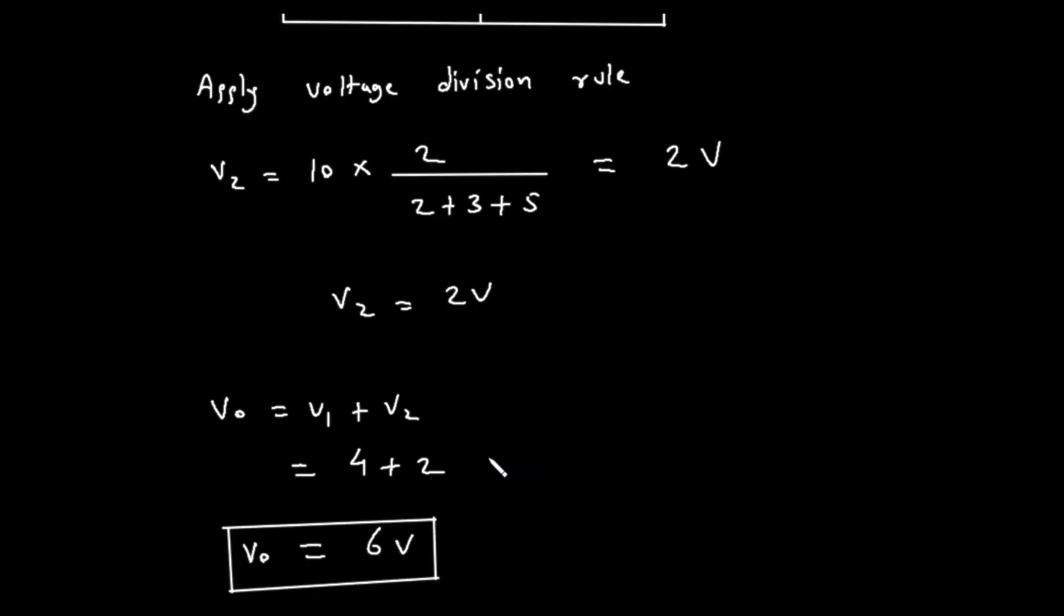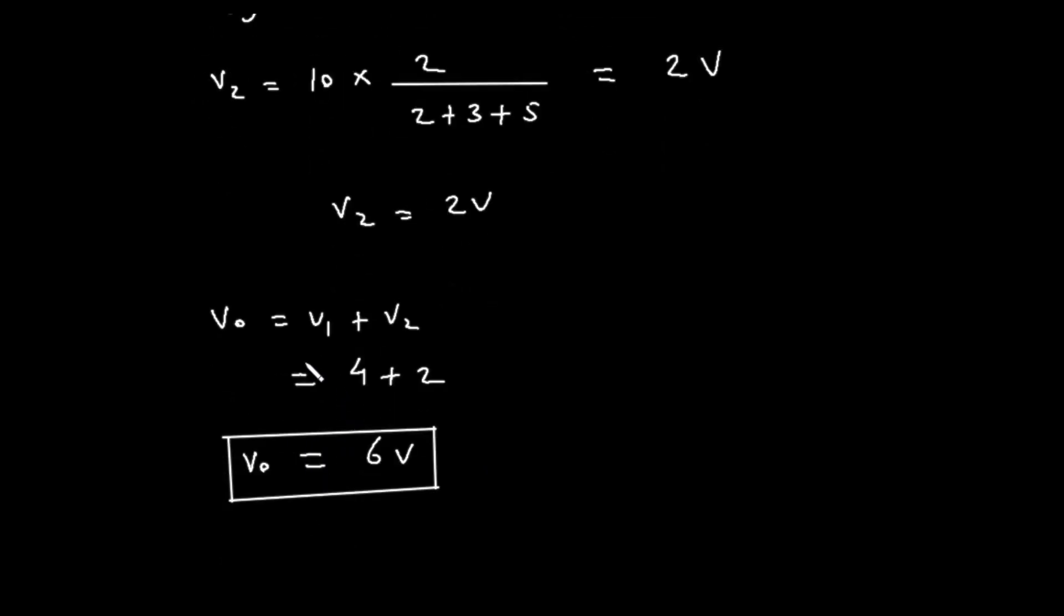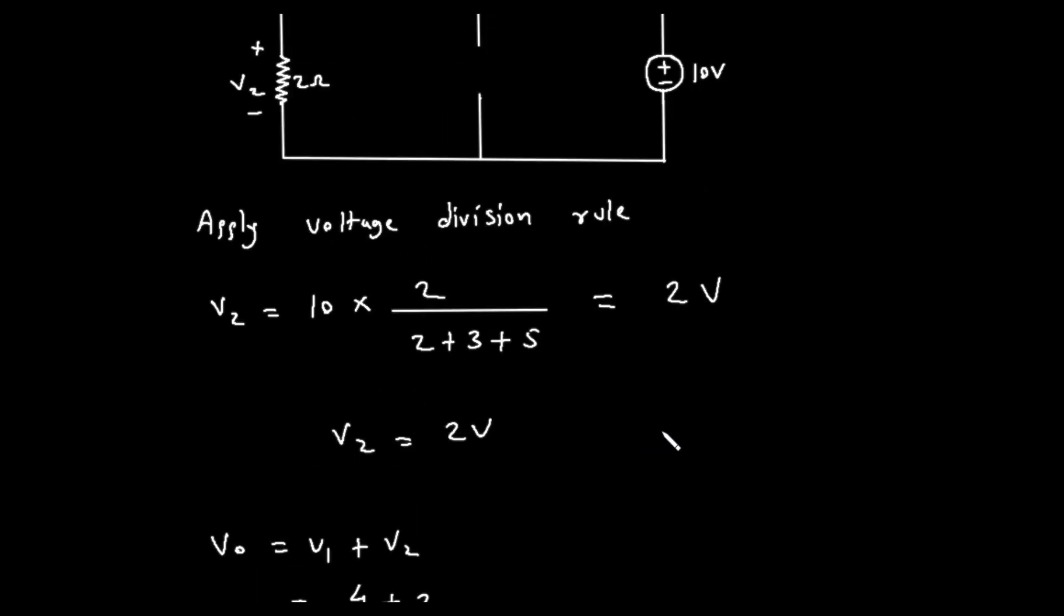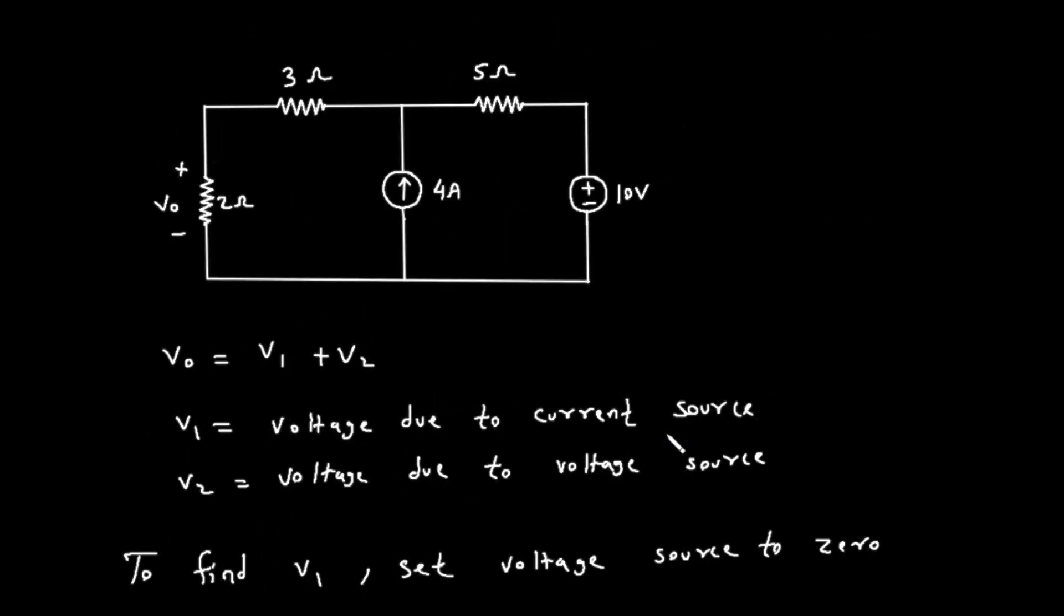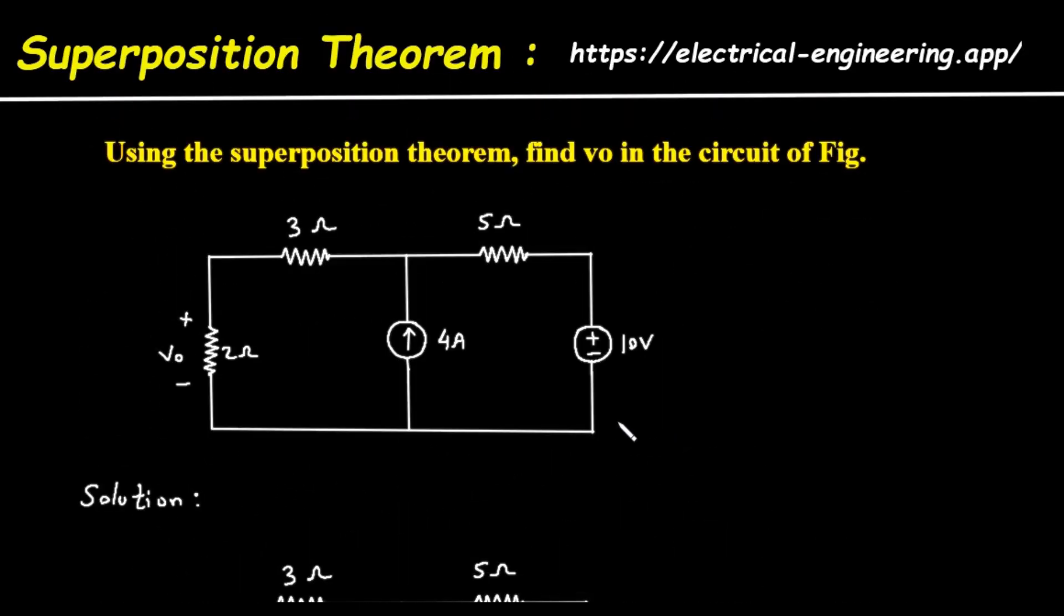Step 3, find the total voltage, VO. So, now we have both components of the voltage. We can find the total voltage VO by adding V1 and V2. VO equals V1 plus V2. Substituting the values we found, VO equals 4 plus 2. This gives us the final answer, VO equals 6 volts. The final result, boxed in the solution, is VO equals 6V.